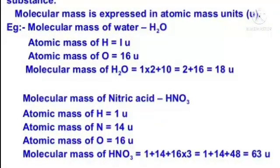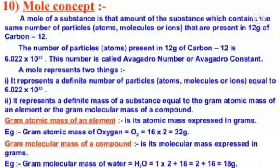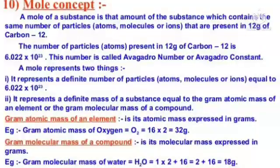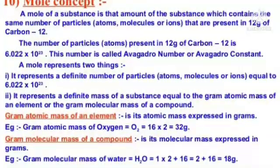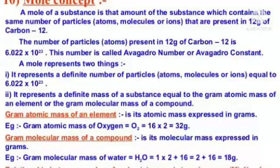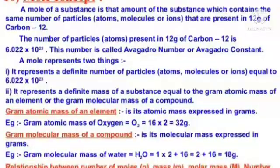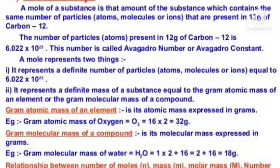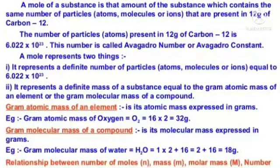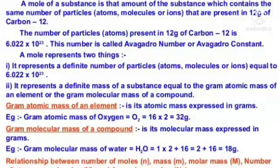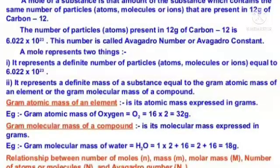Mole concept: A mole of a substance is that amount which contains the same number of particles as are present in 12 grams of carbon-12. The number of particles present in 12 grams of carbon-12 is 6.022 × 10²³. This number is called Avogadro's number or Avogadro's constant. A mole represents two things: a definite number of particles equal to 6.022 × 10²³, and a definite mass of a substance equal to the gram atomic mass or gram molecular mass.